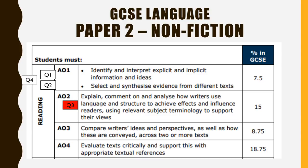Question four is back to AO1. Question five is AO2 — the last AO2 question in the paper; it's not worth many marks, but it does require you to find an example of language and structure. Question six is a 15-mark question — our only AO4 question — and it requires you to evaluate how an author has done something successfully.